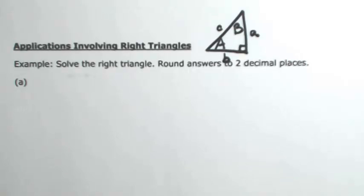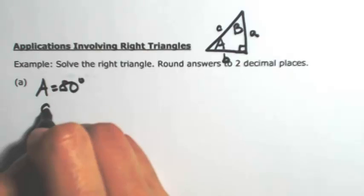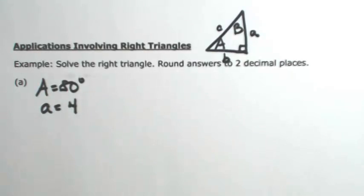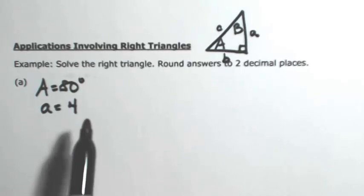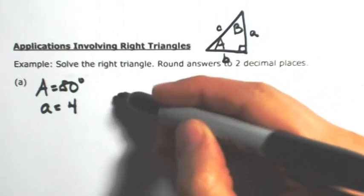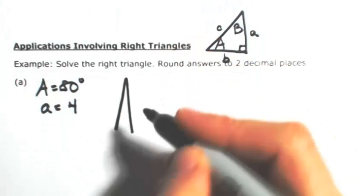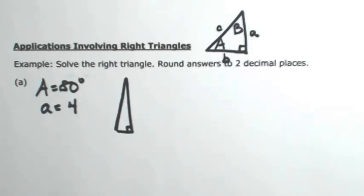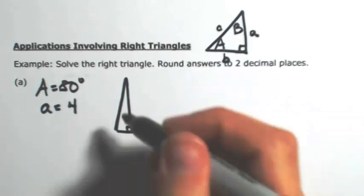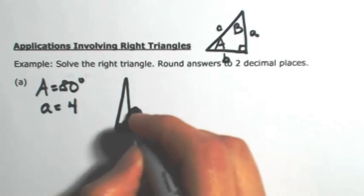For example, let's say angle A is 80 degrees and the side opposite that angle, side a, is 4. I'm going to draw this triangle so we can identify what's missing. Angle A is 80 degrees — 90 degrees would be straight up and down, so just a little to the right of that. Angle A is 80 degrees and the side opposite that is 4.